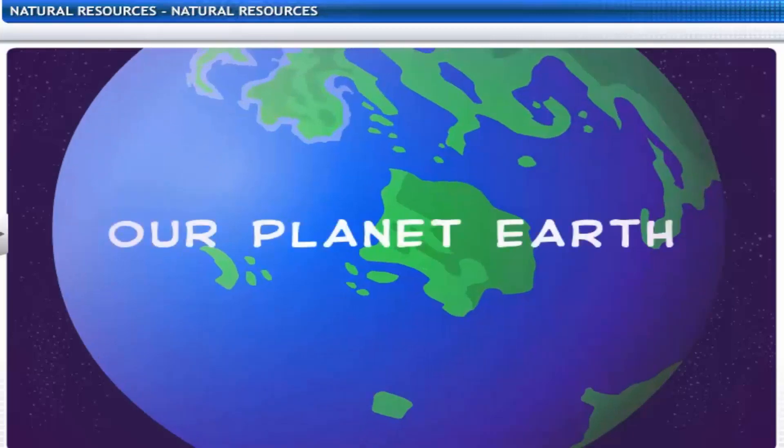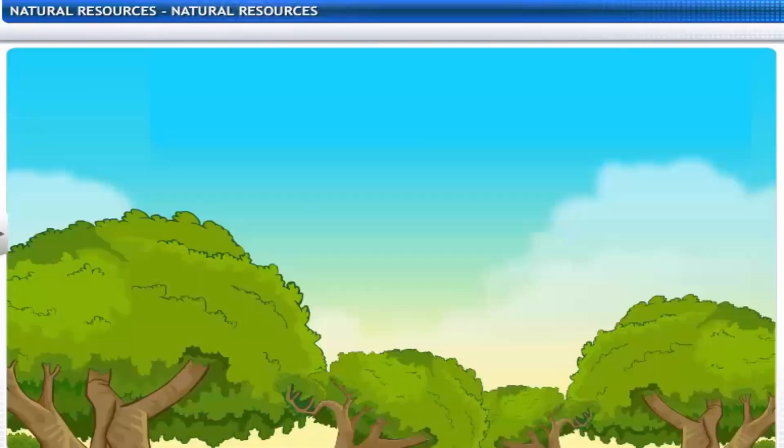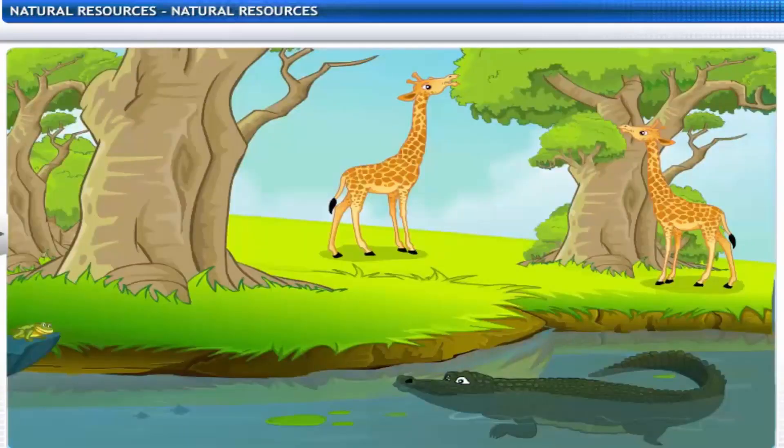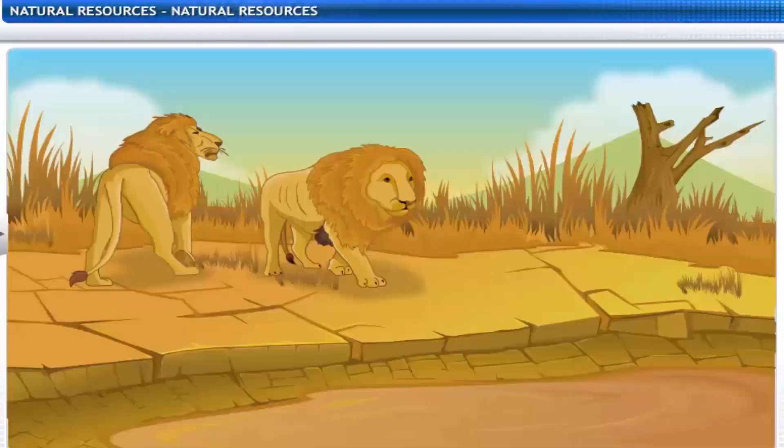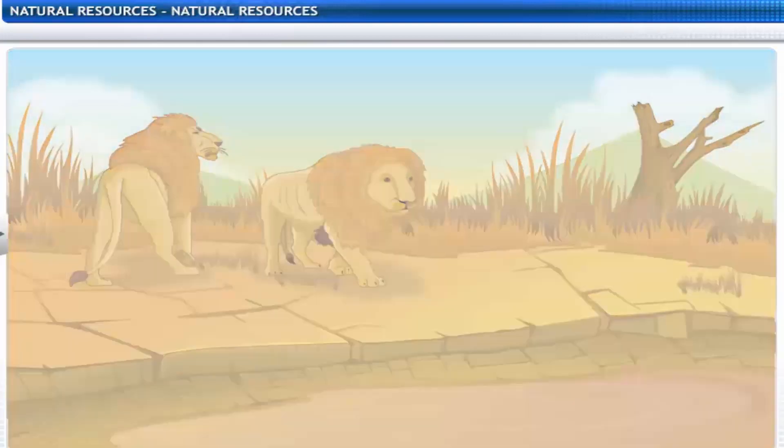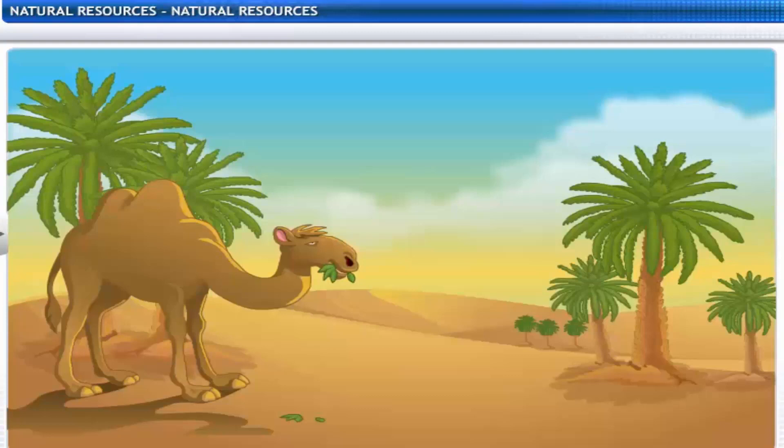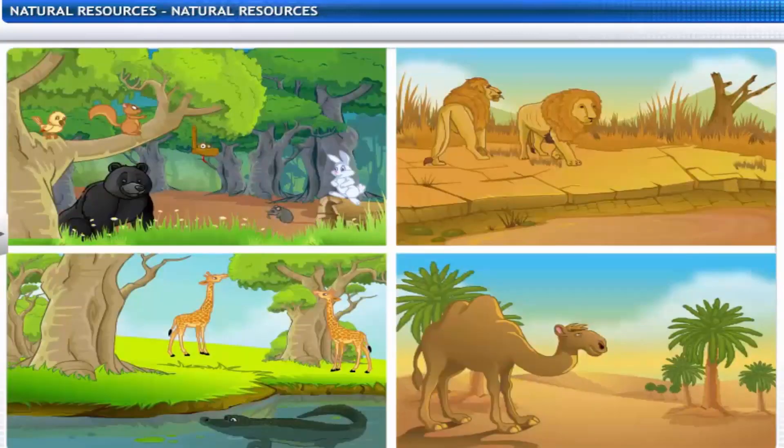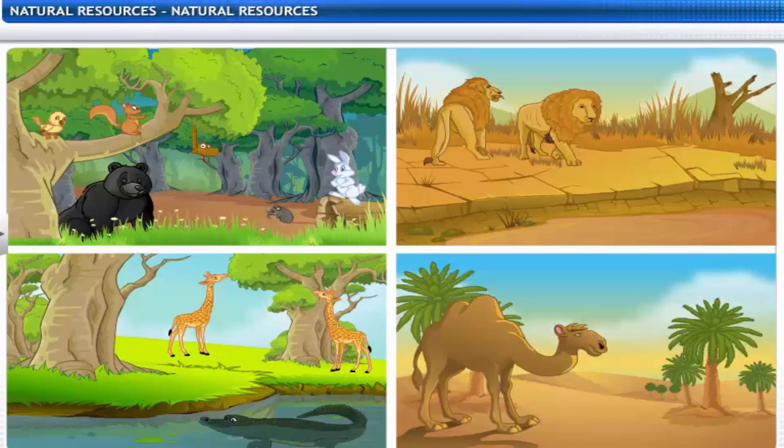The Earth is the only planet known to man that supports life. A variety of plants and animals live on our planet. Natural resources available on Earth influence all life forms.